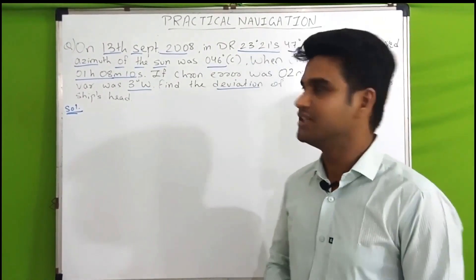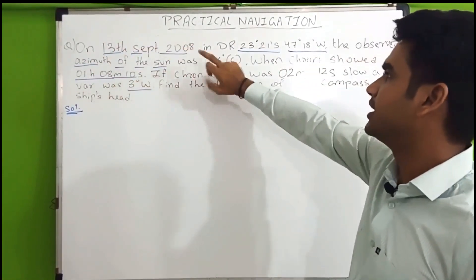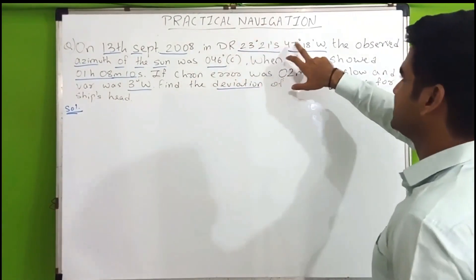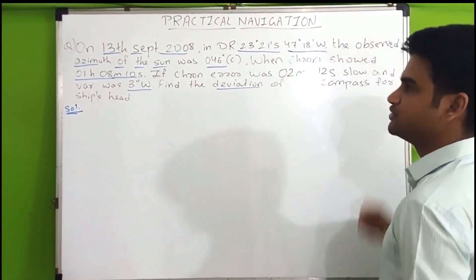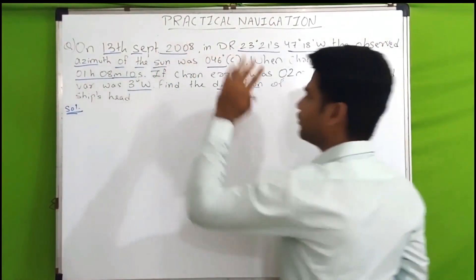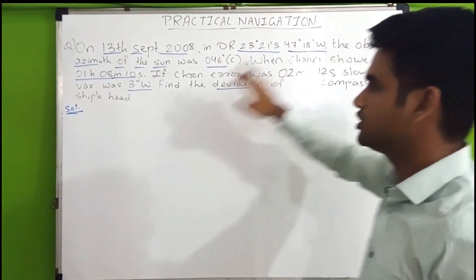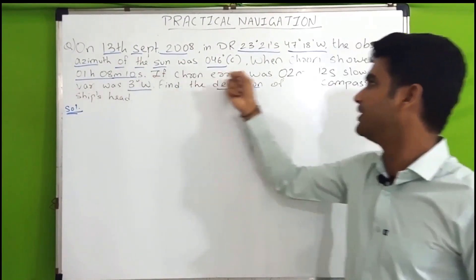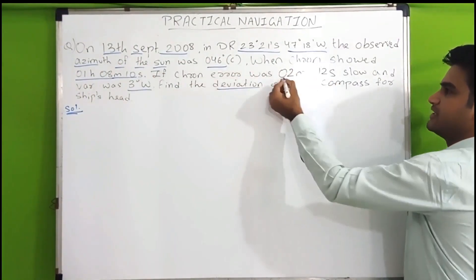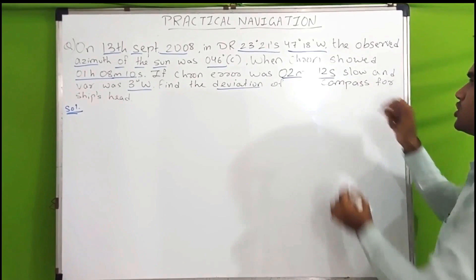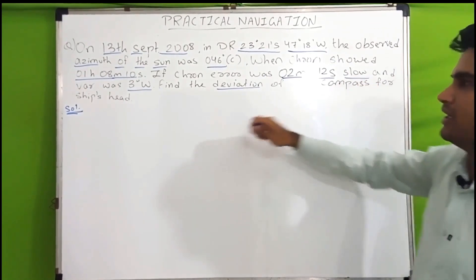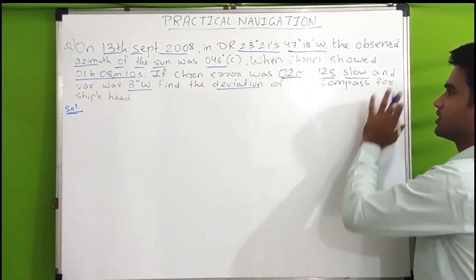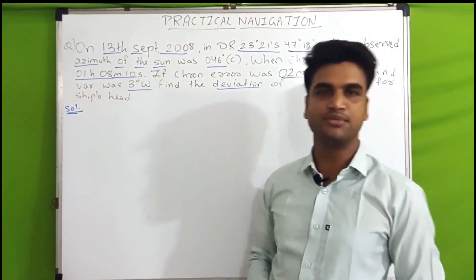The question is: On 13th September 2008, in DR 23° 21' South, 47° 18' West, the observed azimuth of the sun was 046°, when the chronometer showed 01h 08m 10s. The chronometer error was 2 minutes 12 seconds slow, and the variation was 3° West. Find the deviation of the compass for the ship's head.